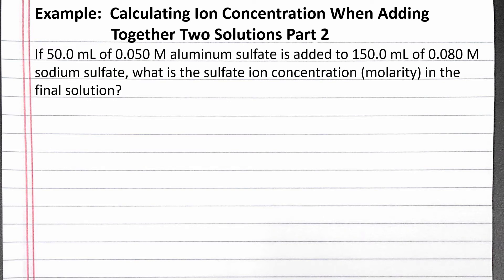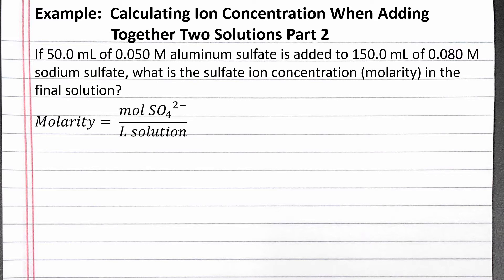In this example problem, we calculate the concentration of ions when adding together two solutions. Our problem reads: if 50 milliliters of 0.050 molar aluminum sulfate is added to 150 milliliters of 0.080 molar sodium sulfate, what is the sulfate ion concentration in the final solution? To calculate molarity of sulfate ions, our equation is moles of sulfate divided by liters of solution.